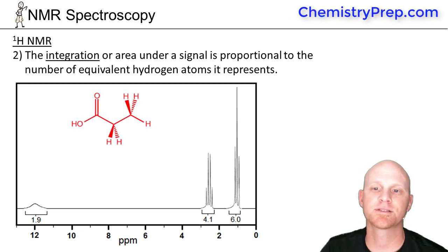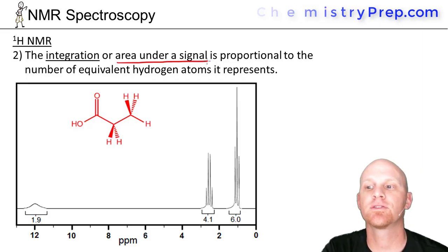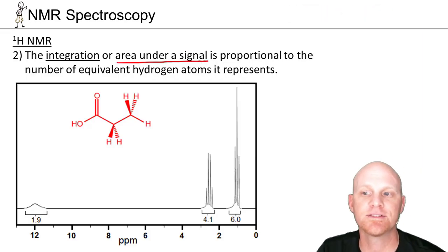The second piece of information we're going to process from the ¹H NMR is the integration or area under a signal. If you've had calculus, you know that taking an integral helps you find the area under a curve. That's essentially what we're going to do here.